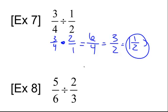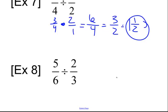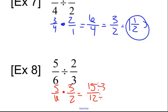Try number eight on your own. Five-sixths divided by two-thirds: it's actually going to be five-sixths times three over two. Five times three is fifteen, six times two is twelve. We have to reduce — we divide by three and get five over four. Four goes into five once, with one left over out of four, giving us one and one-fourth.